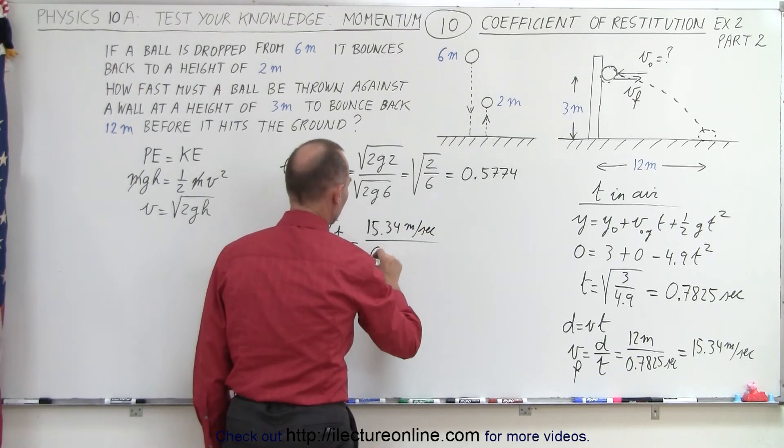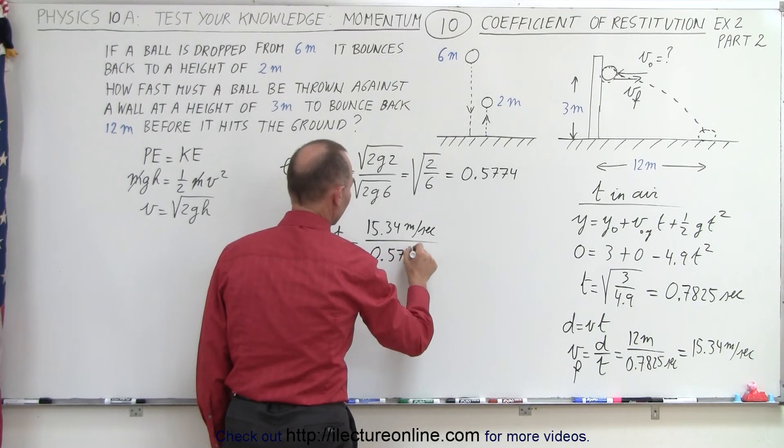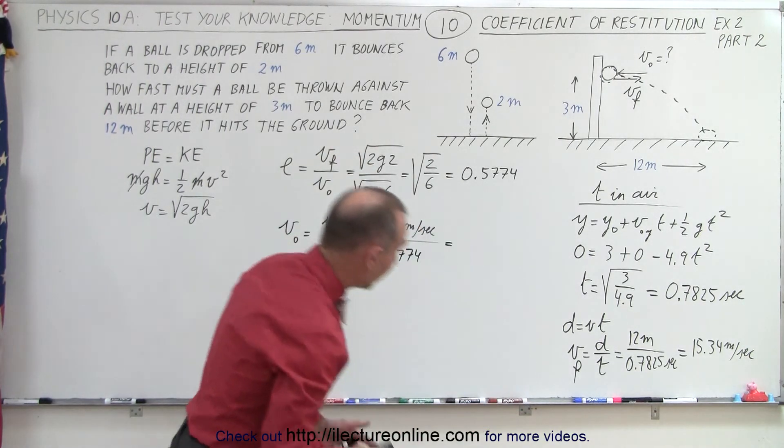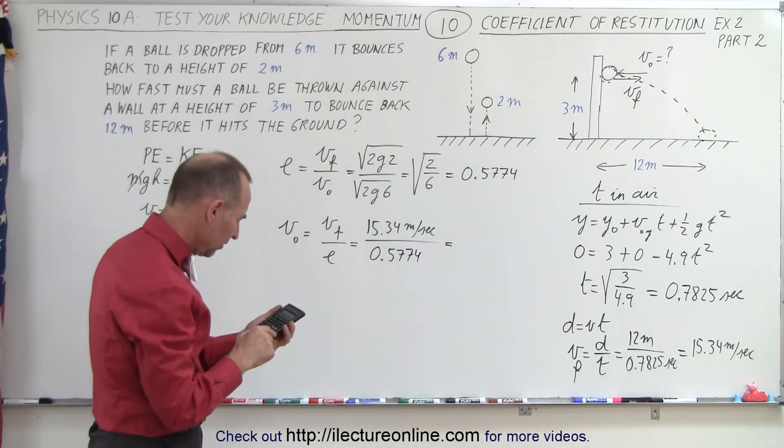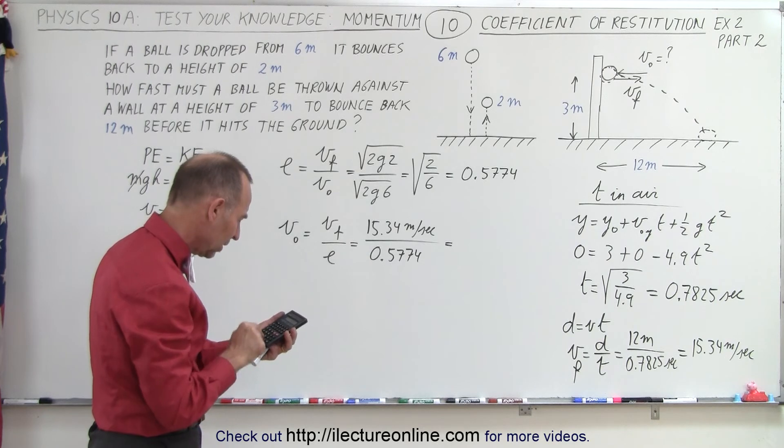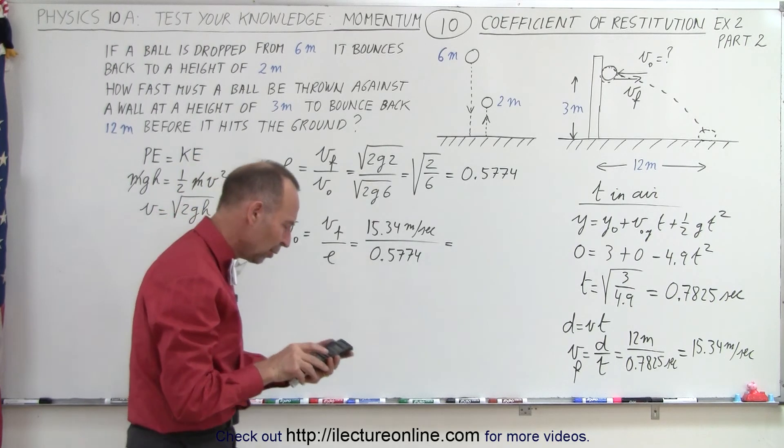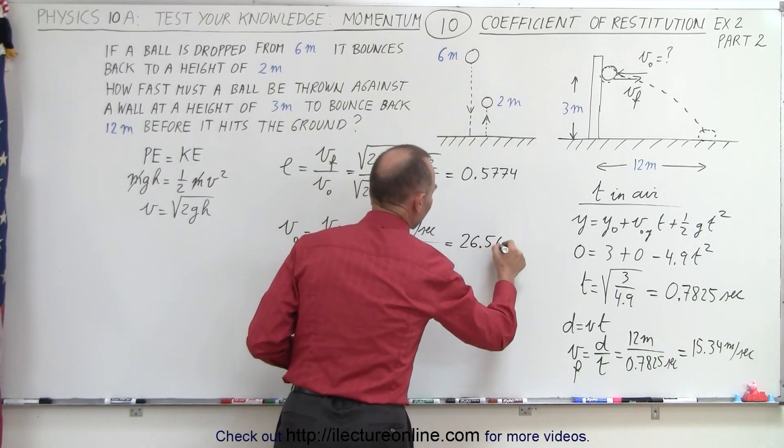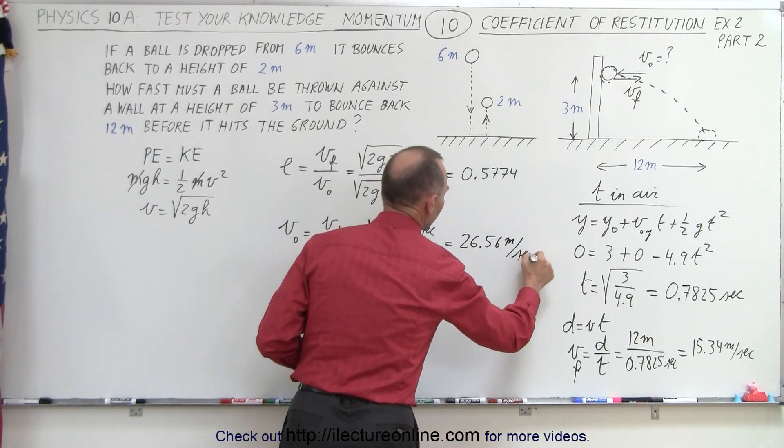And the coefficient of restitution is 0.5774, which means we need to throw the ball with an initial velocity of 26.56 meters per second. 26.56 meters per second.